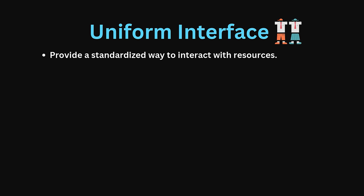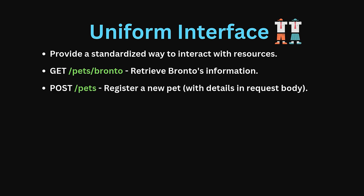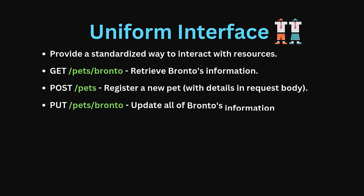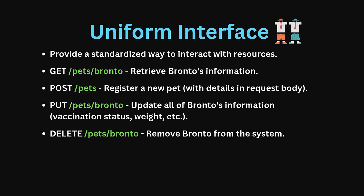Following this, we have Uniform Interface. REST services provide a standardized way to interact with resources through four primary operations that map to HTTP methods: GET, POST, PUT, and DELETE. For example, a GET request to /pets/bronto retrieves Bronto's information. A POST request to /pets registers a new pet with details in the request body. A PUT request to /pets/bronto updates all of Bronto's information, such as vaccination status or weight. And DELETE, when invoked on /pets/bronto, removes Bronto from the system.